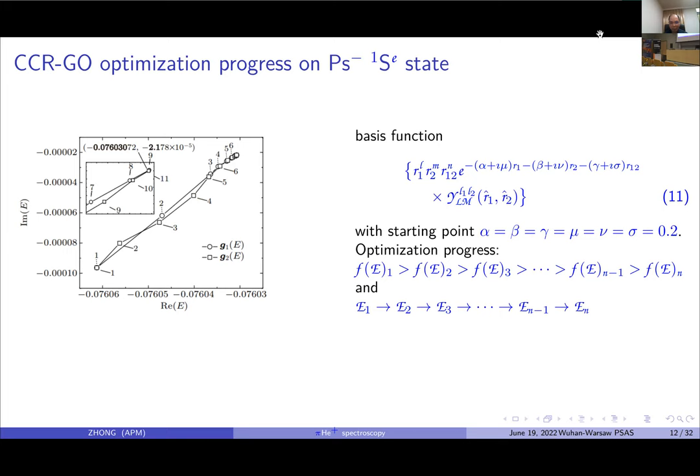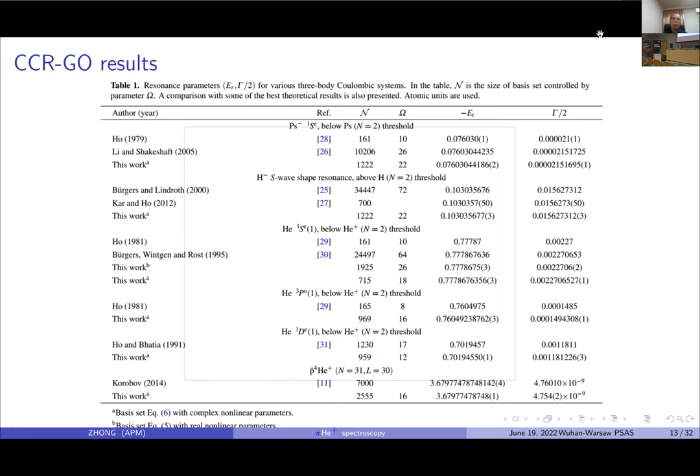By using this algorithm, we can search the optimal point without manual adjustment on variational parameters. Here is our results on different three-body systems such as PS minus ion, hydrogen minus ion, helium double excited states, and antiproton helium.